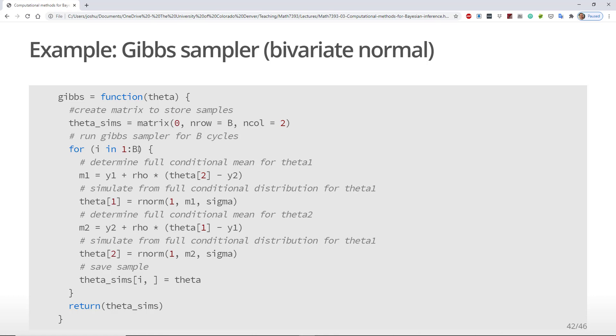I then create a loop running from 1 to b to repeat b cycles of my Gibbs sampler. For each iteration of the loop, I then do a number of things. First, I compute the mean of the full conditional distribution for theta1. Note that it depends on the current value of theta2. I then draw from the full conditional of theta1 and update the value of theta1. I then take the most current value of theta1, which is the value I just drew, and use that to update the mean of the full conditional distribution for theta2.